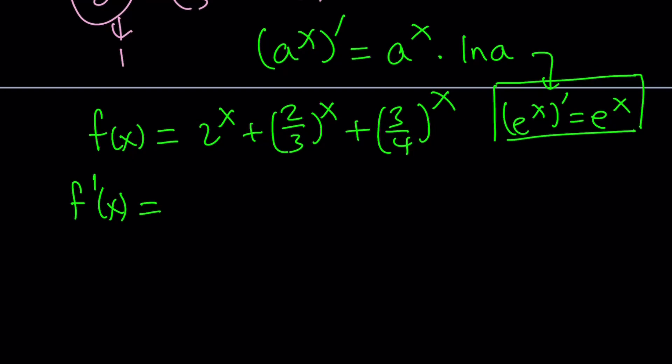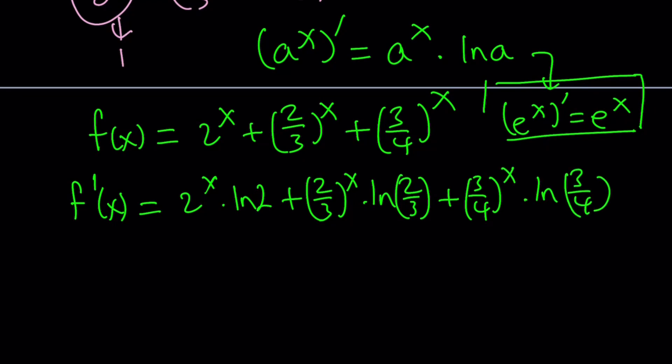So let's differentiate this function using the rule. Here's what we're going to do: 2^x multiplied by ln(2) plus (2/3)^x times ln(2/3) plus (3/4)^x times ln(3/4). Great. Easy, right? You just write the same thing and multiply by the ln of the base. Fairly simple.